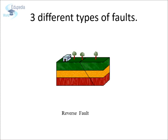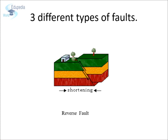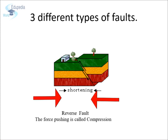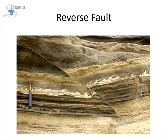When blocks of rock are subjected to compression, it will squeeze the blocks of rock into a smaller space. Due to this, the hanging wall will push itself up relative to the foot wall. This creates a reverse fault. A type of reverse fault is called a thrust fault. At a thrust fault, the fault plane angle is nearly horizontal and rocks can slip many miles along thrust faults. As you can observe in this picture, the hanging wall has moved up relative to the foot wall.